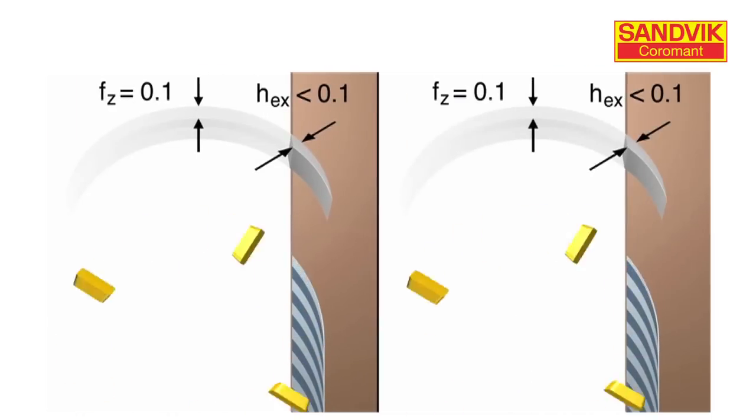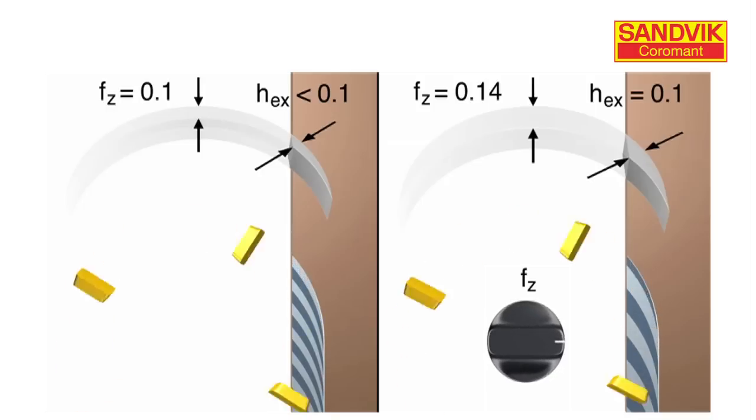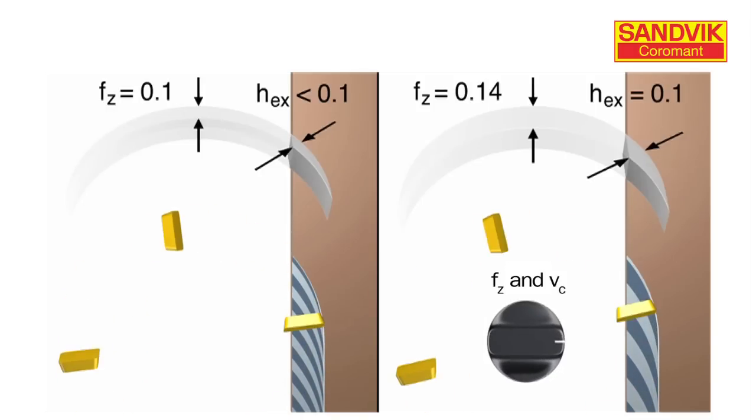On the right side, we show a small radial engagement. We're generating a thick to thin chip, but we need to optimize the cutting data so we increase the feed and, because of the short contact length, we can also increase our cutting speed.